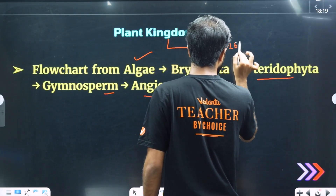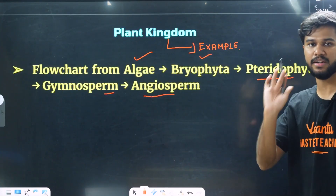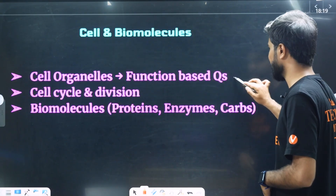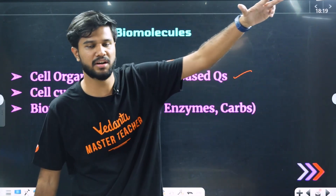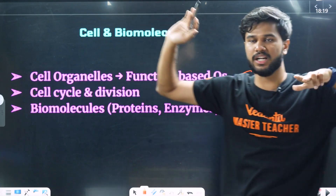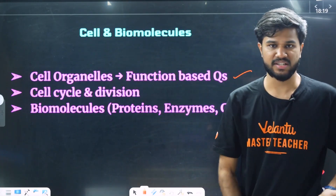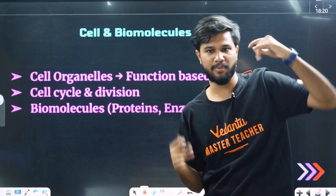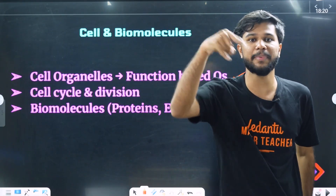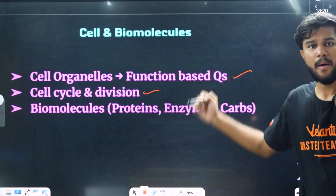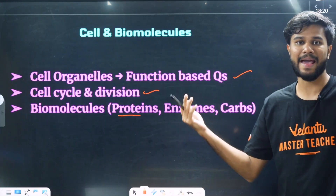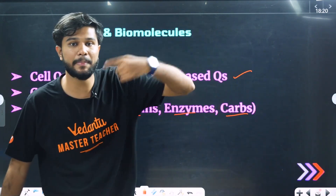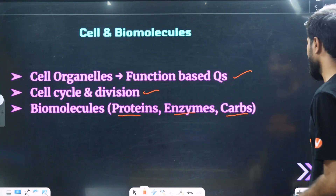Same as animal kingdom — most questions are raised. Some examples of the question — animal kingdom only. The cell and biomolecules — the cell includes the function: mitochondria, chloroplasts, the functional organelles. We will learn the zoology. Cell and biomolecules functions: mitochondria, nucleus, endoplasmic reticulum. The cell organism — in the next topic, one question repeat — that is cell cycle, cell divisions, biomolecules, protein amino acids, macromolecules, micromolecules, protein, enzymes, carbohydrates — type one question repeat — biomolecules, this topic is important.